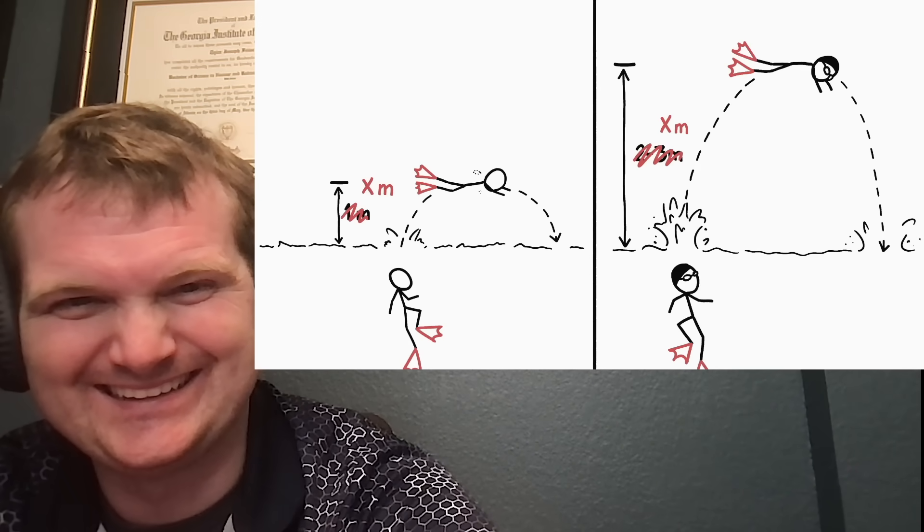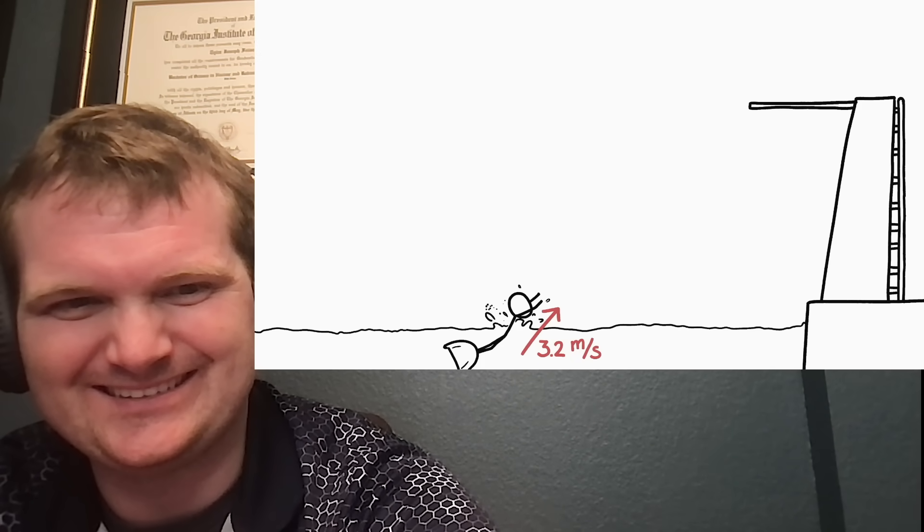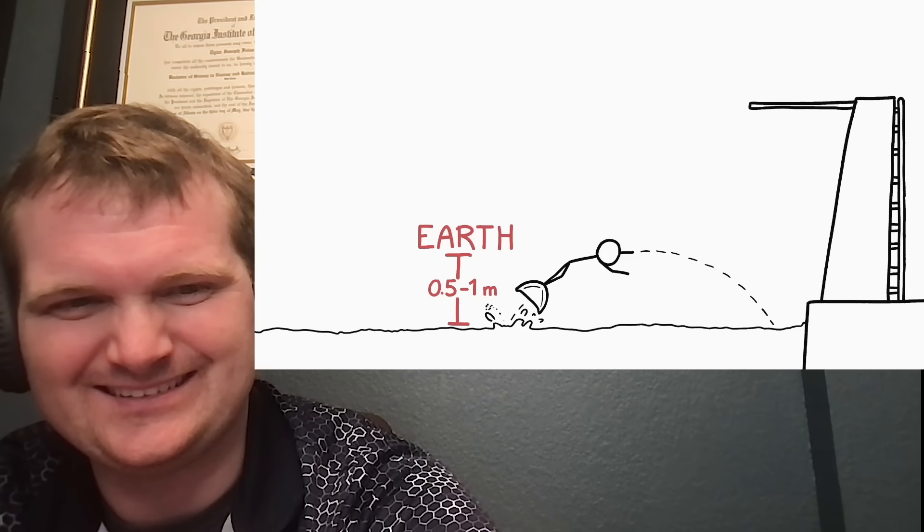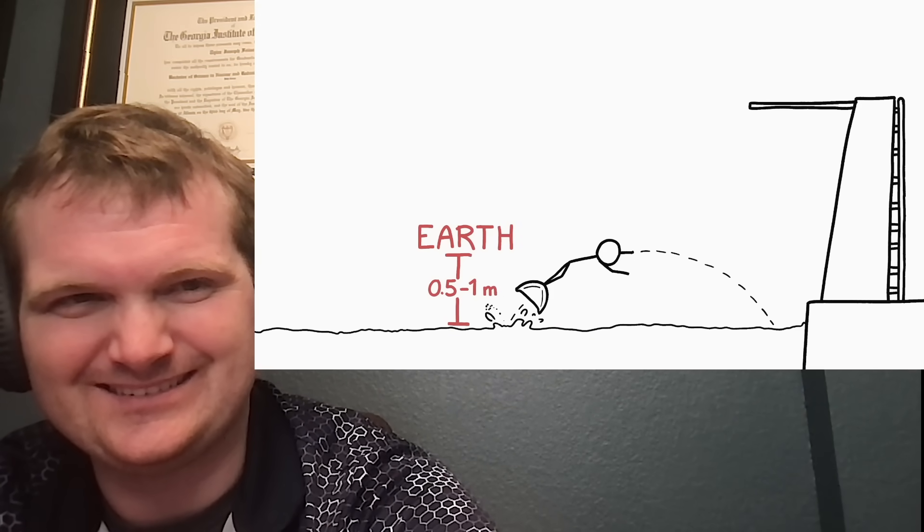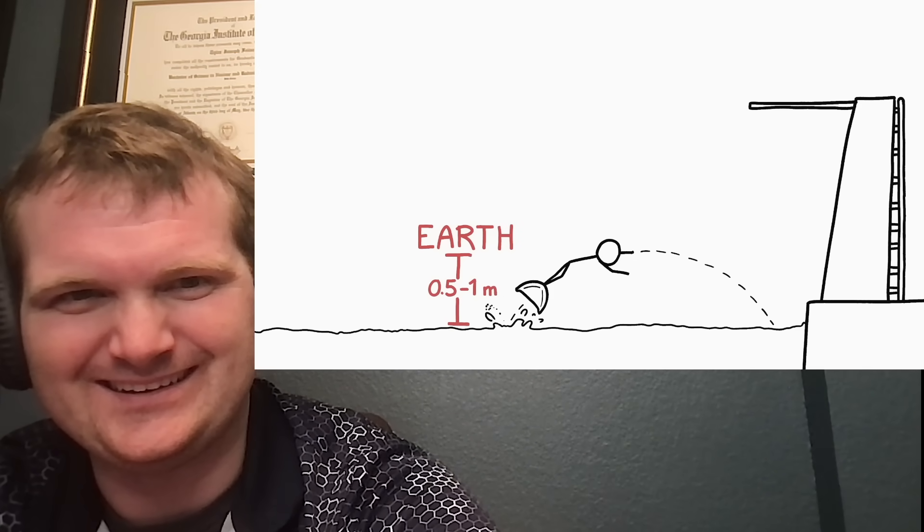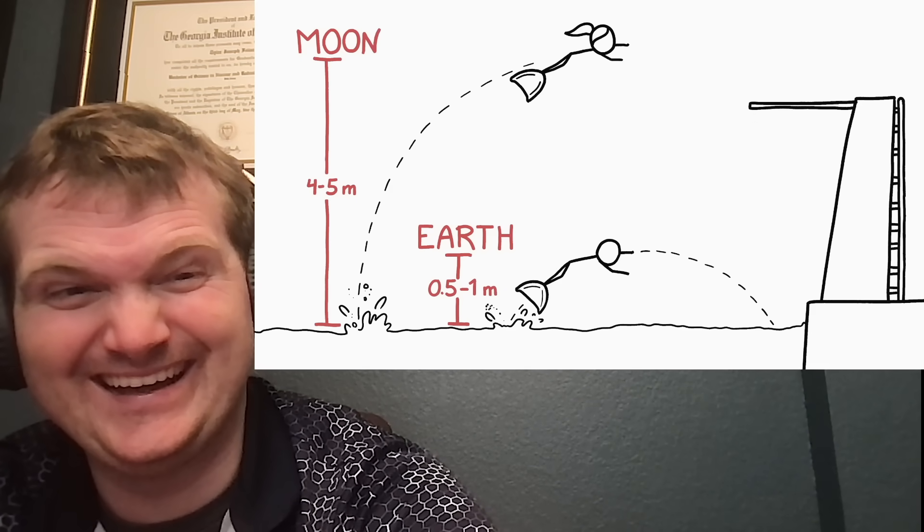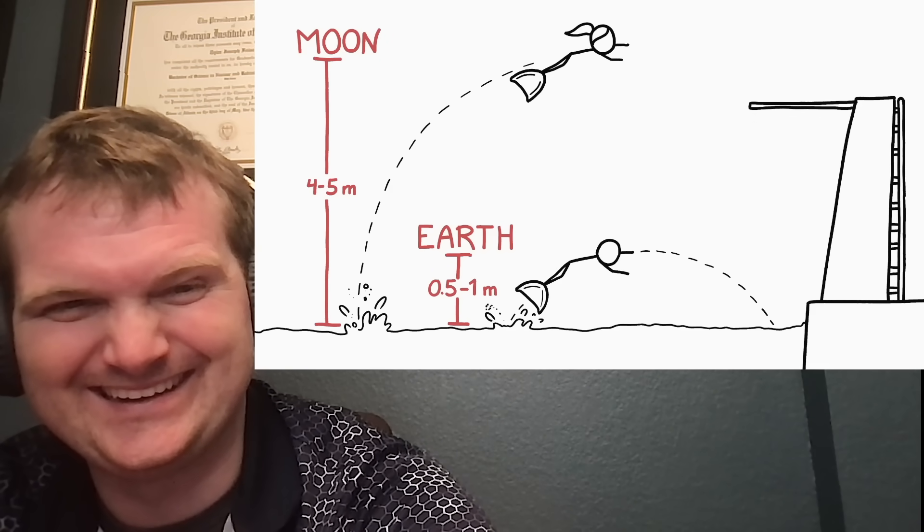The numbers get even more exciting when we introduce fins. Swimmers wearing monofins can exceed 3 meters per second, which is fast enough for some pretty impressive jumps, even on Earth. Data on finswim top speeds and thrusts suggest that on the moon, a champion finswimmer could probably launch themselves as high as 4 or 5 meters into the air.